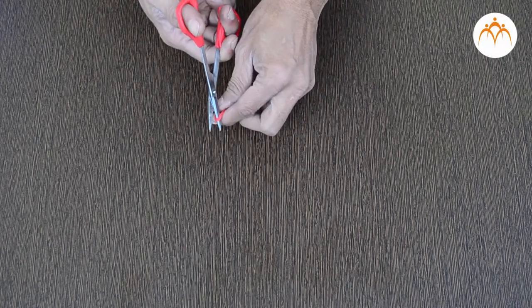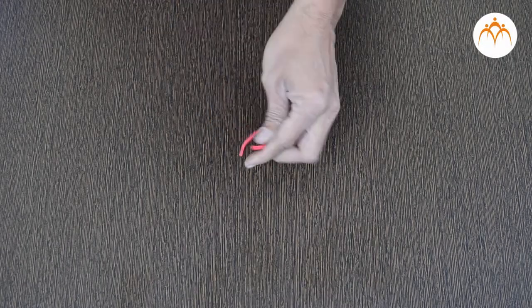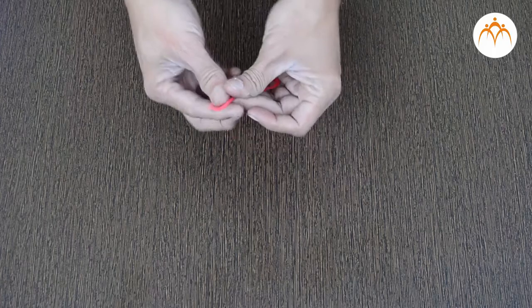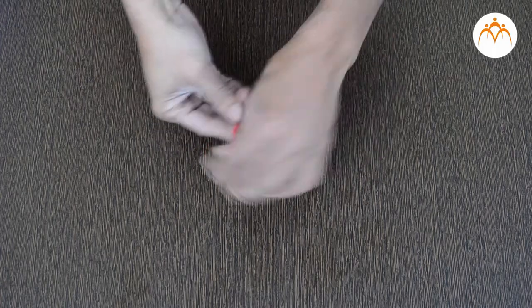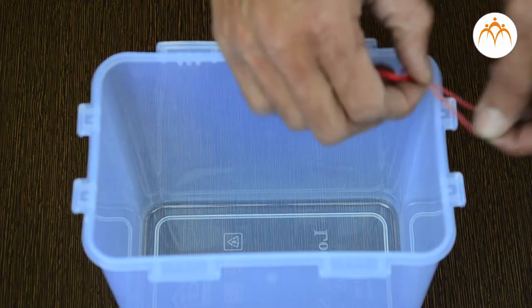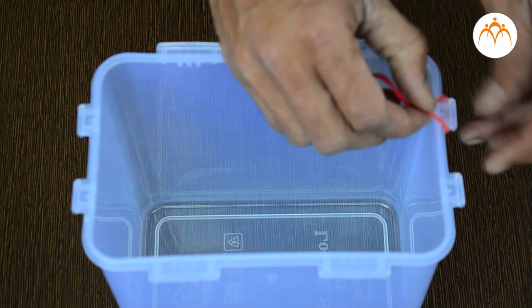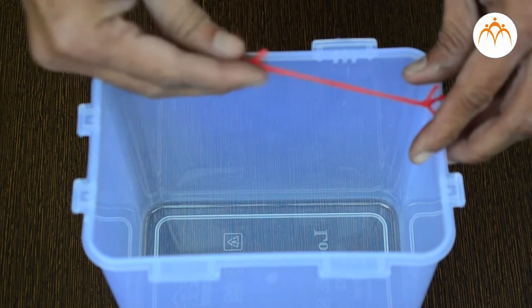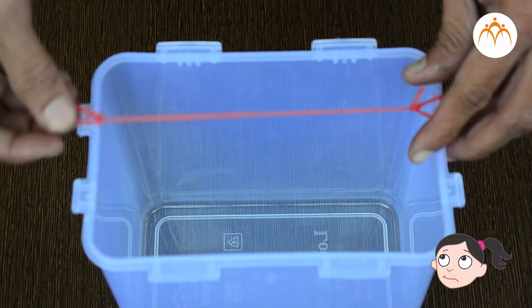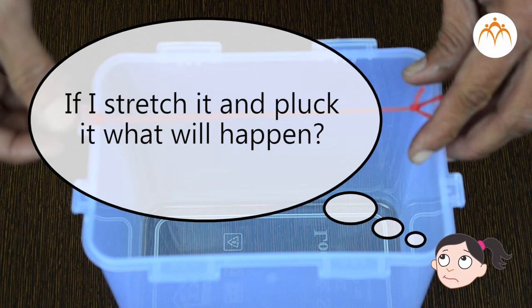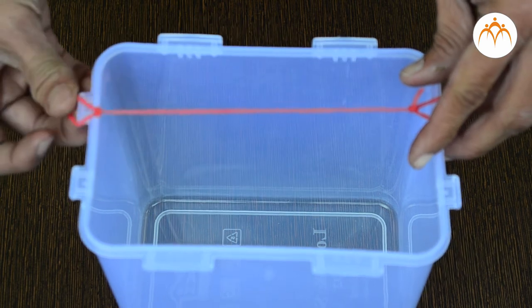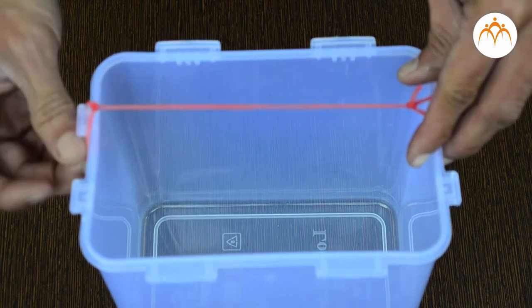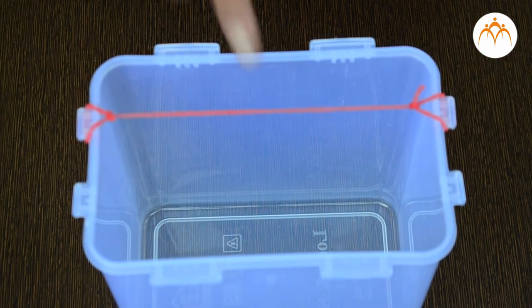Let me take a rubber band and break it. I will tie a knot at one end and lock it in this gap of an empty box. If I stretch it and pluck it, it will vibrate and we will hear the sound.